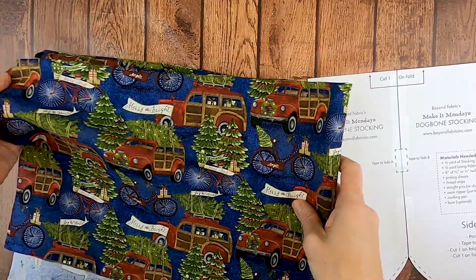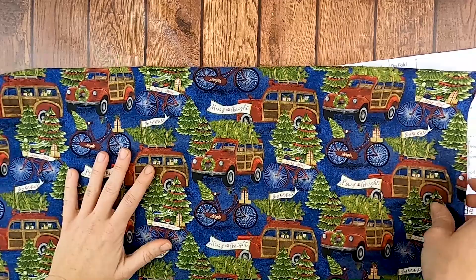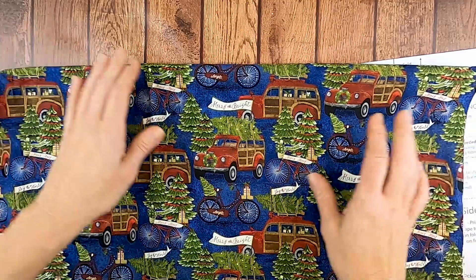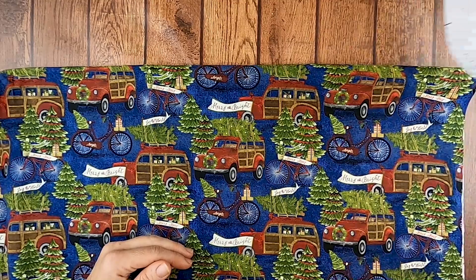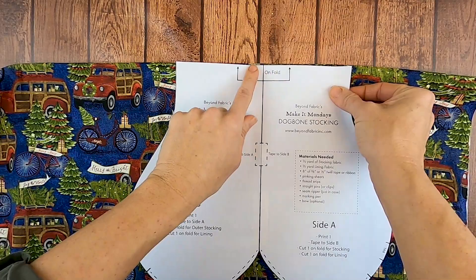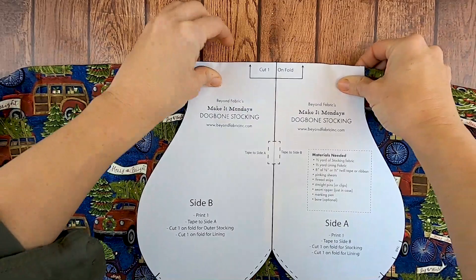And so what I'm going to do is fold my fabric so that I have the fold at the top and I have the pattern facing me so it's going the correct way. And then I'm going to place this with the cut one on fold right up there at the fold.